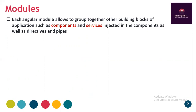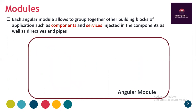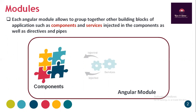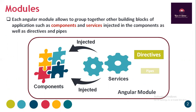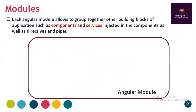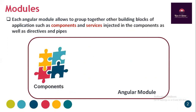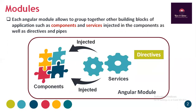Each Angular module allows you to group together other building blocks of an application such as components, services, directives, and pipes. Diagrammatically, an Angular module groups together components, services, directives, and pipes. These services are injected into components as and when needed, and a service can be used by one or many components. We will see directives, pipes, and routers in the next upcoming sessions.